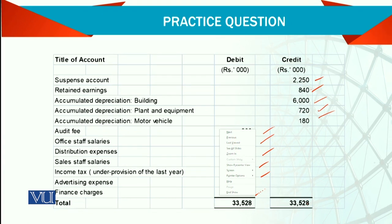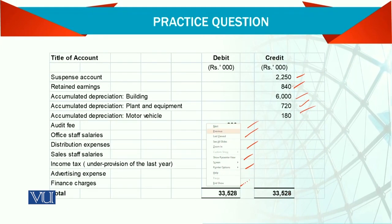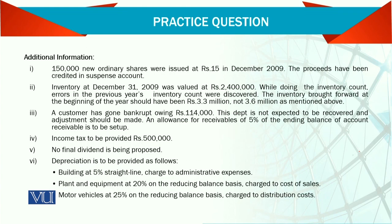Now based on this there are some adjustments. These adjustments are many and in this question there are numbers. First: 150,000 new ordinary shares were issued at rupees 15. The par value is 10 rupees and 5 rupees is the premium. So when we prepare the statement of change in equity, we will show an addition of share capital and an addition of share premium.